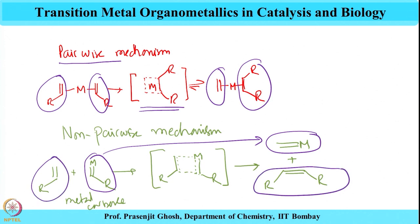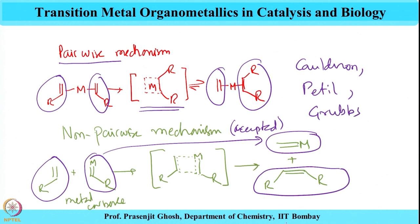This is the accepted mechanism. We discussed the various famous names starting from Calderon, Petit, and Graves, who proposed pairwise mechanisms which unfortunately did not turn out to be correct, followed by Chauvin, the French scientist who proposed the correct non-pairwise mechanism that we have just discussed.